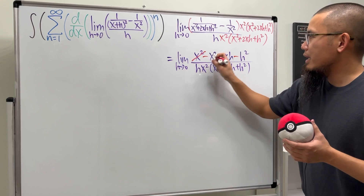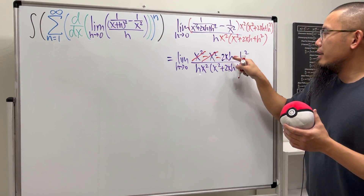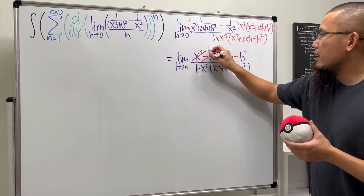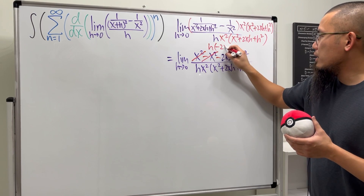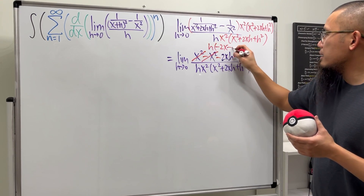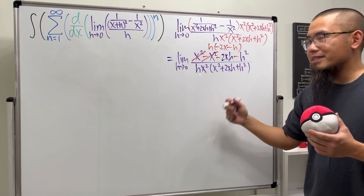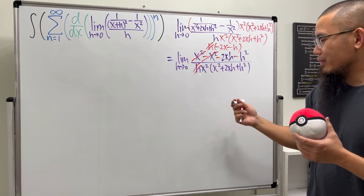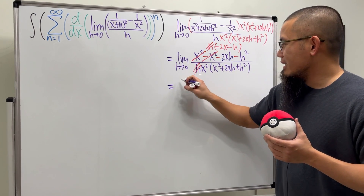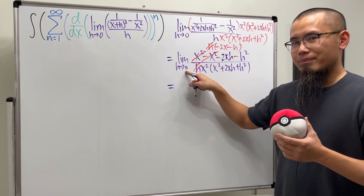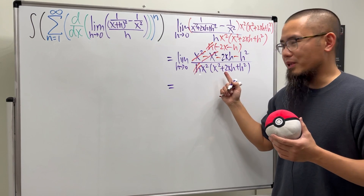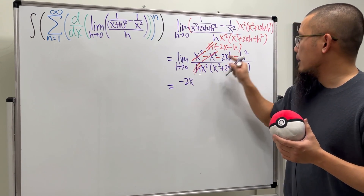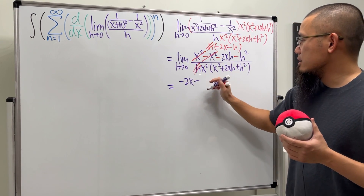Now this and that cancel. Both numerator terms have an h, so let's factor that h out. We get negative 2x minus h. That h cancels with the h in the denominator.